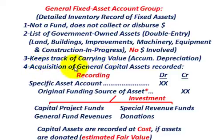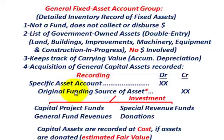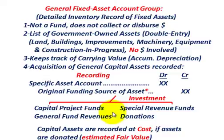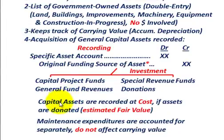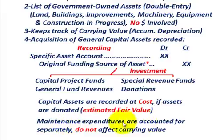For the acquisition of a general capital asset, you debit the specific asset account and credit the original funding source of the asset, listed as an investment. That funding source could be the capital projects fund, general fund revenues, special revenue funds, or donations. Capital assets are recorded at cost; if donated, use the estimated fair value. Maintenance expenditures are not accounted for separately and do not affect the carrying value.